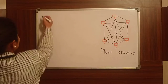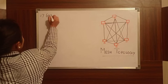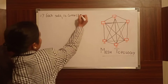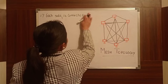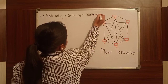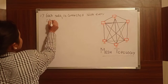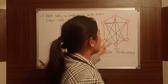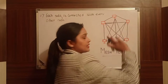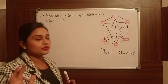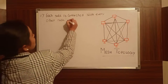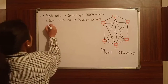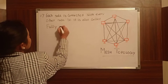So we will write the first point: each node is connected with every other node. It is also called fully networked topology.